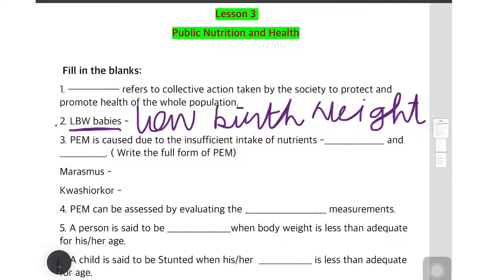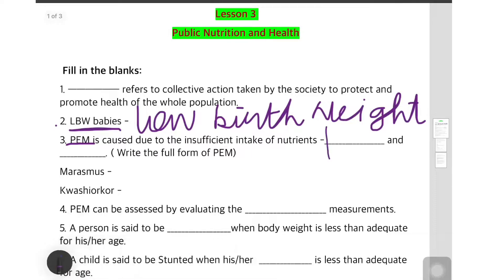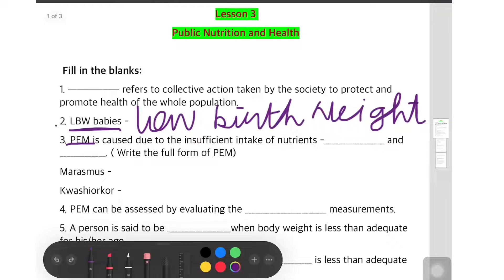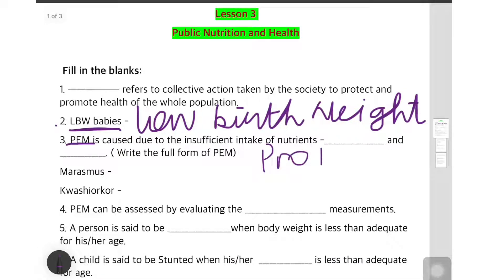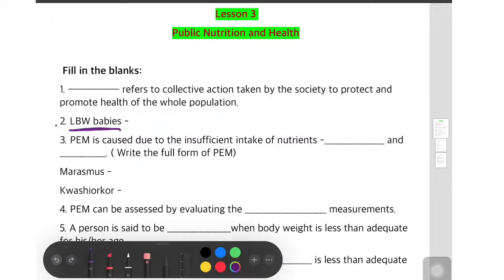The next question: PEM is caused due to the insufficient intake of nutrients. First of all, you should know what PEM is — PEM is Protein Energy Malnutrition. You should know the full form of PEM. It is caused due to the deficiency of protein (spelling: P-R-O-T-E-I-N) and energy. So there are two answers.